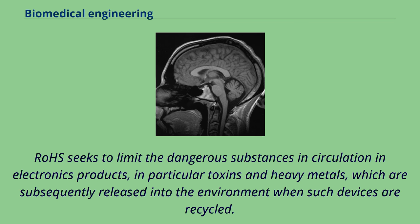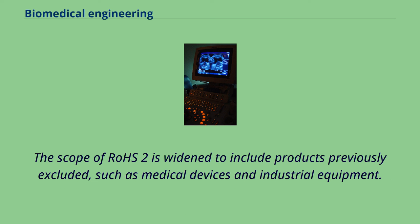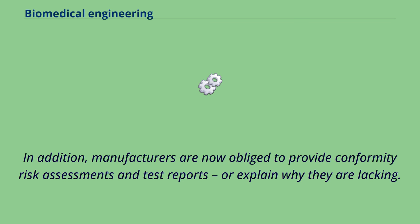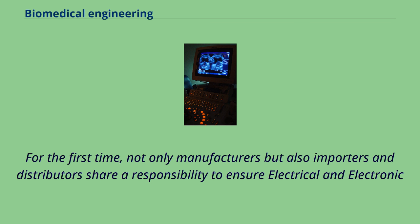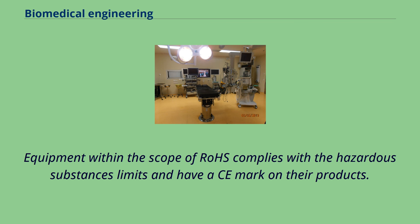The scope of RoHS2 is widened to include products previously excluded, such as medical devices and industrial equipment. Manufacturers are now obliged to provide conformity risk assessments and test reports, or explain why they are lacking. For the first time, not only manufacturers but also importers and distributors share a responsibility to ensure electrical and electronic equipment within the scope of RoHS complies with the hazardous substances limits and have a CE mark on their products.